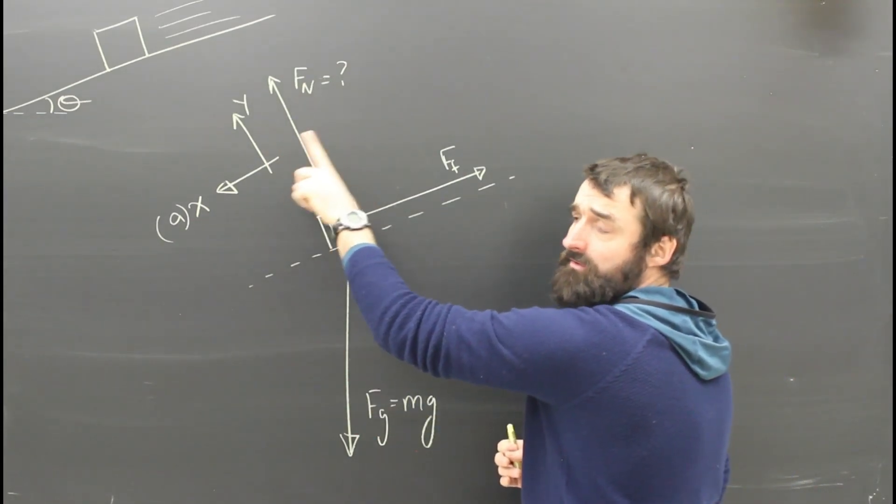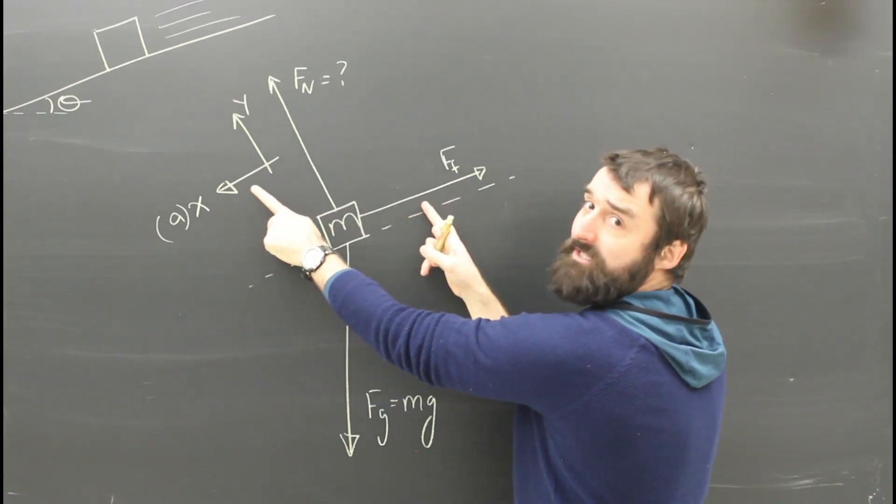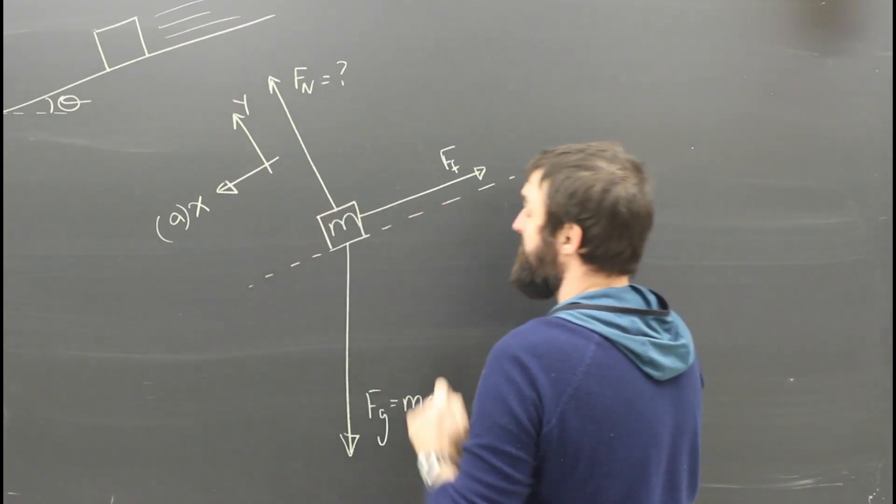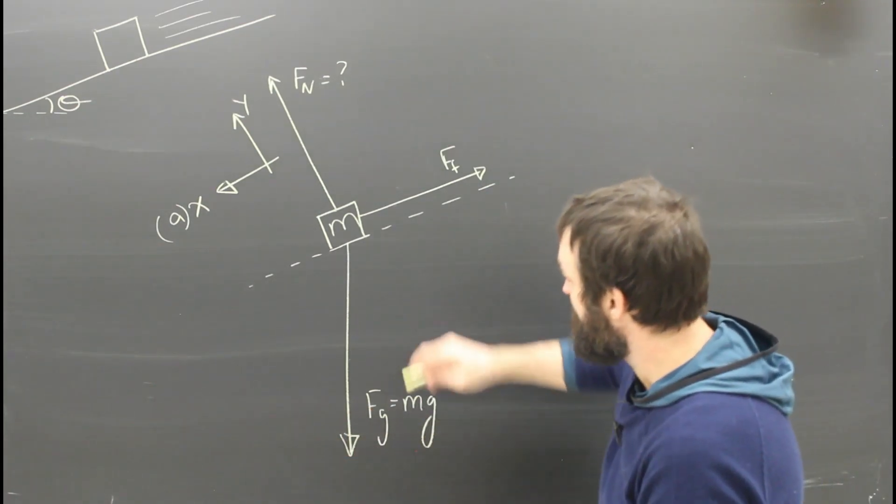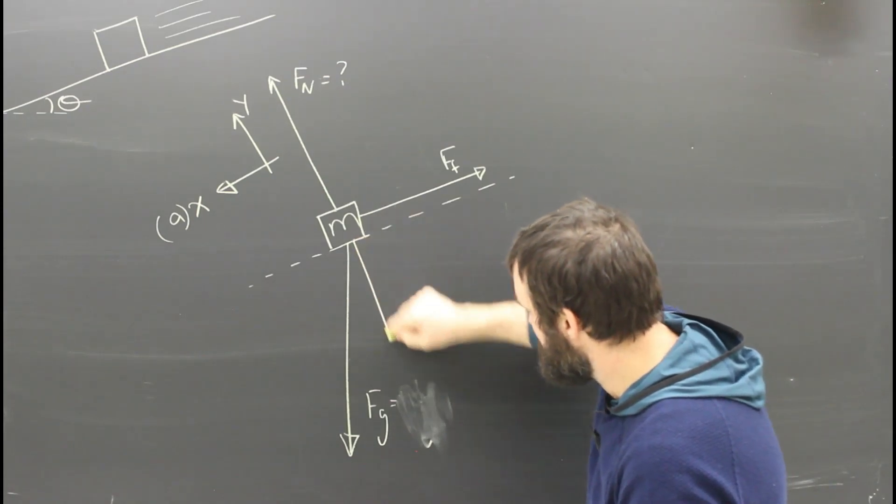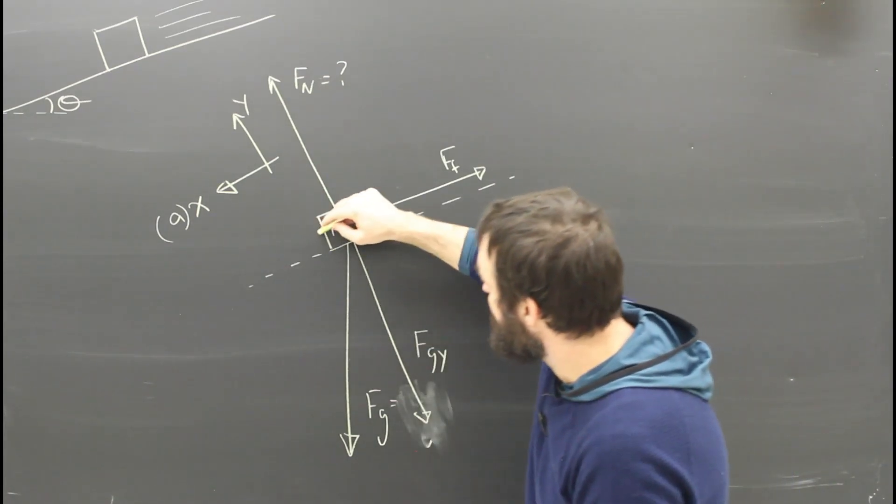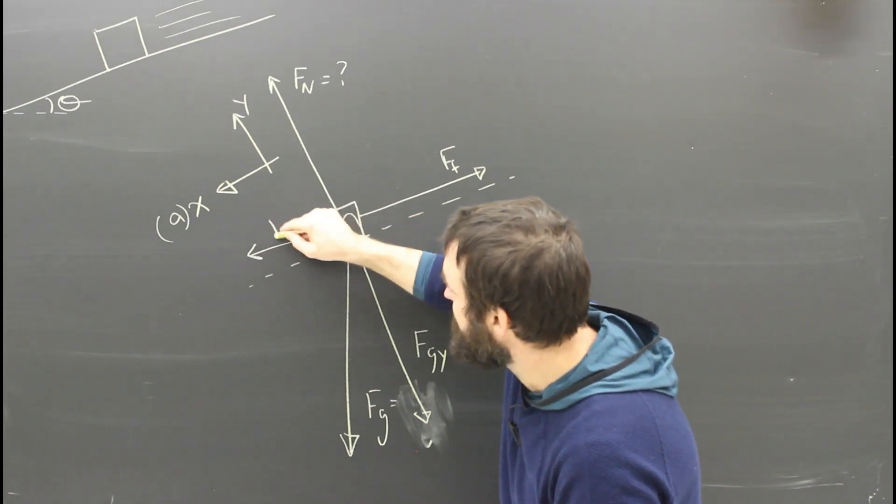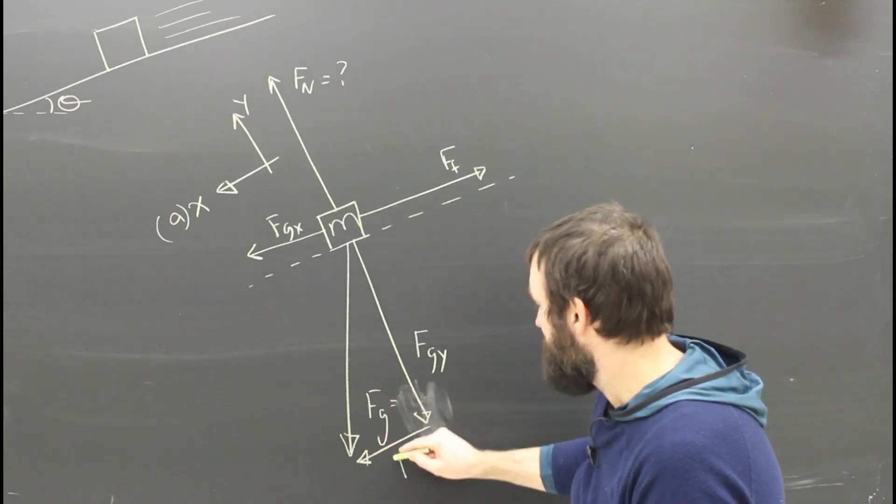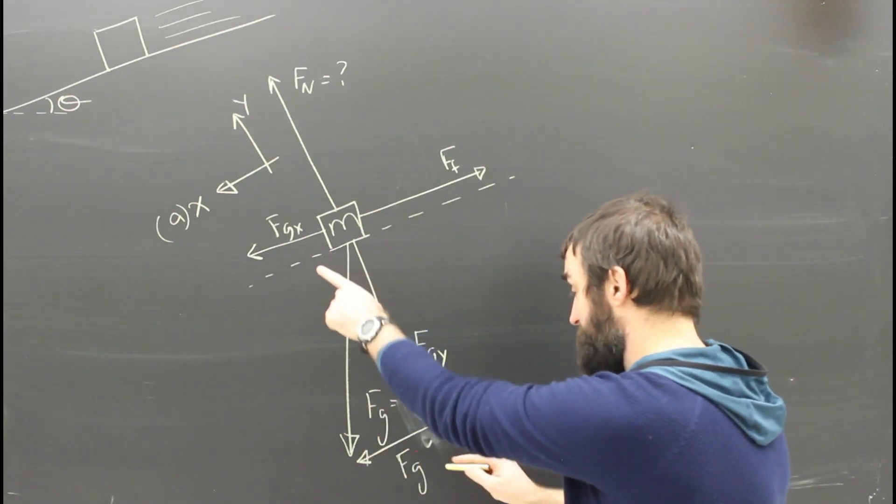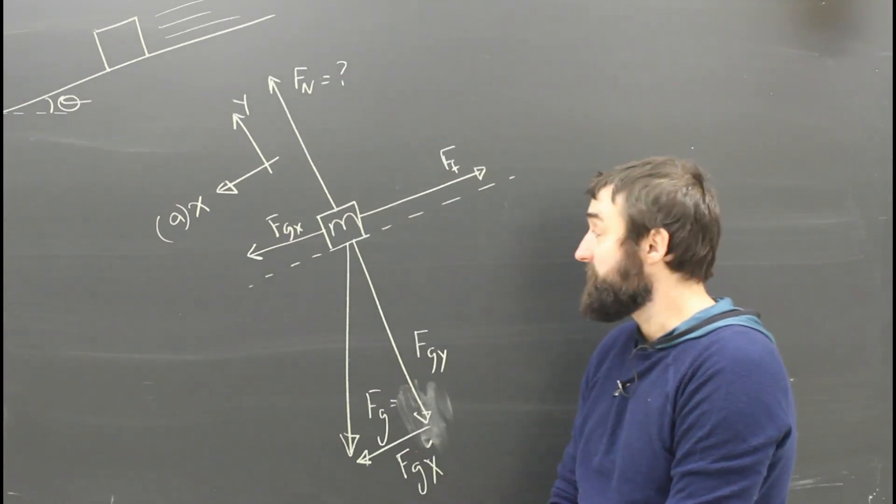Fn is already in the y direction. Ff is already in the negative x direction. You can see these two lines are perfectly parallel. The only thing therefore that's not in the x or y direction is gravity. So I'm going to take gravity and break it up into Fgy and Fgx. You can draw Fgx there or here, but I think it's a good idea to draw it up here just so you don't forget about it when it comes time to doing your x and y equations.